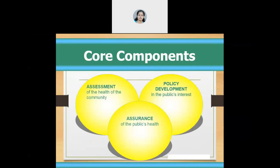Public health has three major components. Public health systems have the responsibility of assessing the health of the community, developing policies in the interest of the public, and primarily assuring the public health of the community. When we think about the responsibilities and the public health approach, people like us will also come into the picture — it's a collective responsibility of ensuring the health of the community.